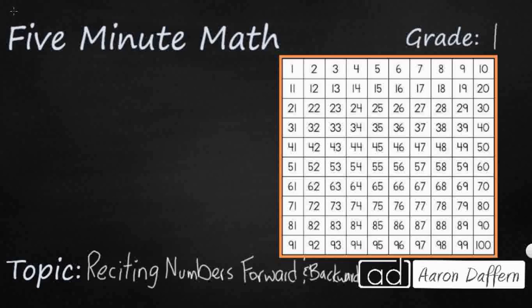So we're going to start with just a random number, 17. And a lot of times when we're counting in first grade, we like to start at 1 and we go all the way up and see how high we can go. But sometimes we need to be able to start at a number in the middle of the 100 chart.